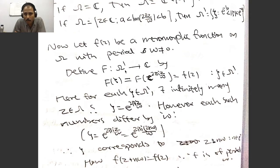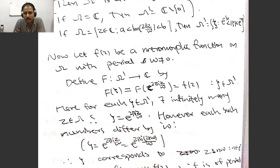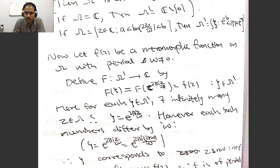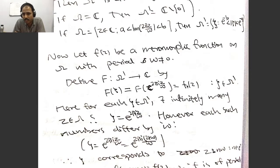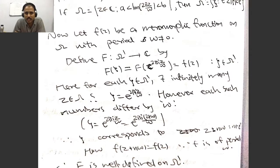We can define capital F on Ω' as follows. Capital F(ζ): since ζ is an element of Ω', any element in Ω' is the image under the exponential map, so it is of the form exp(2πiz/ω). This z need not be unique — if z satisfies this, then z + ω also satisfies it. But the good thing is that small f is periodic with period ω, so this definition is well defined.